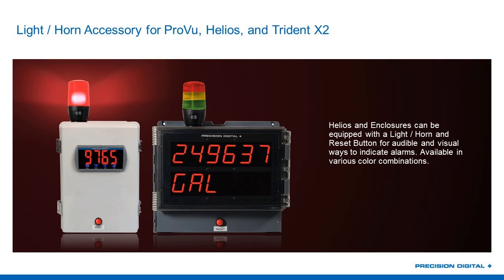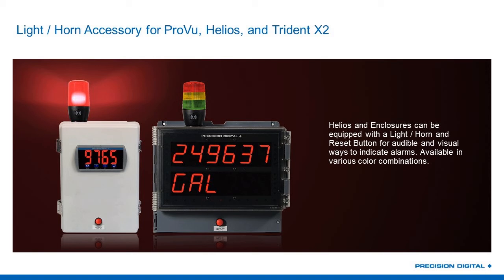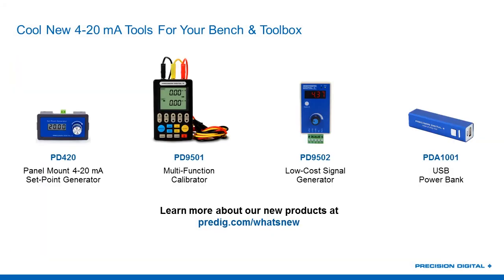Starting on page 3, we've got our What's New page showing our Helios with light and horn and our NEMA enclosures with light and horn — in this case the Helios with a three-color light on top and our Trident X2 meter with a single red light. What I'm going to do here is an illustration of how you should go through this guide — that's the limit of what I'll say about the Helios and Trident X2. I showed it to you and now we're moving on, because when we say show this guide to your customers, we're not asking for a 30-minute presentation.